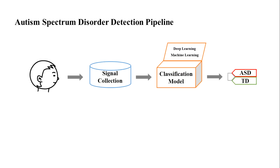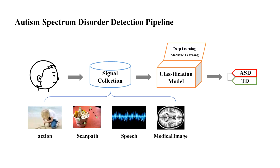Let's see the pipeline of ASD detection. When a child comes, we will first collect some signals. The signals include the following four types, and our work mainly focuses on the action signals.